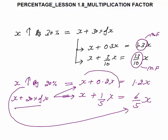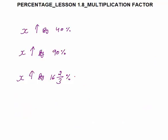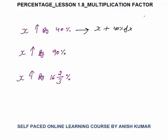You don't have to work out each step in the exam — that is just for explanation. Next, x increased by 40%: you can straight away say 40% is 0.4, so x plus 0.4x becomes 1.4x. Now 1.4 is the multiplication factor, and you must also know the reverse: if x becomes 1.4x, it means there is a 40% increase.